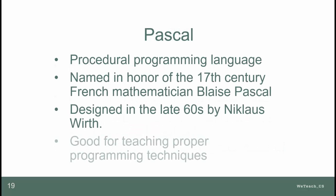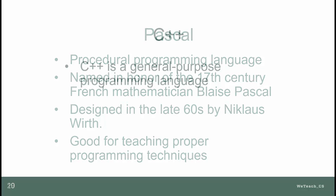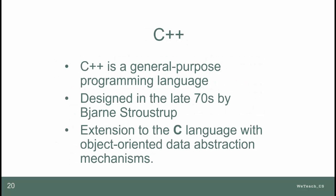PASCAL was developed in the late 60s by Nicholas Wirth to serve as a strong teaching language, enforcing good structural and design habits. It was the original language of the computer science AP test, which was first offered in 1984. C and C++ came along in the 1970s and gradually replaced PASCAL as the prominent general-purpose language, further developing object-oriented programming as a new design paradigm, replacing the older procedural and functional programming approaches. In 1999, the CSAP test switched to C++ as the language on which the exam was based.